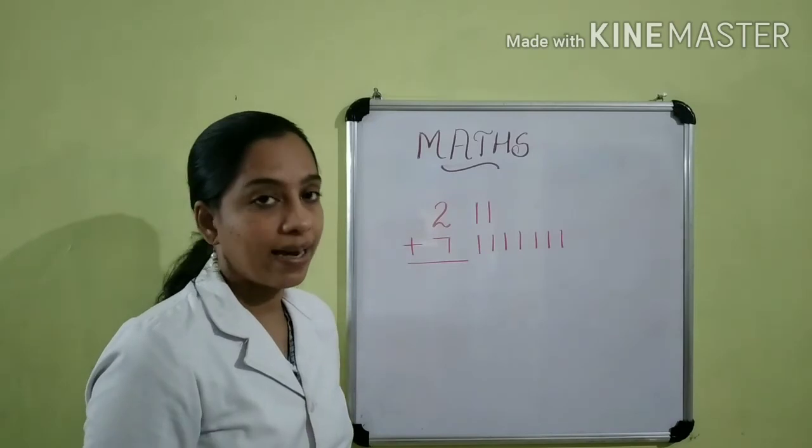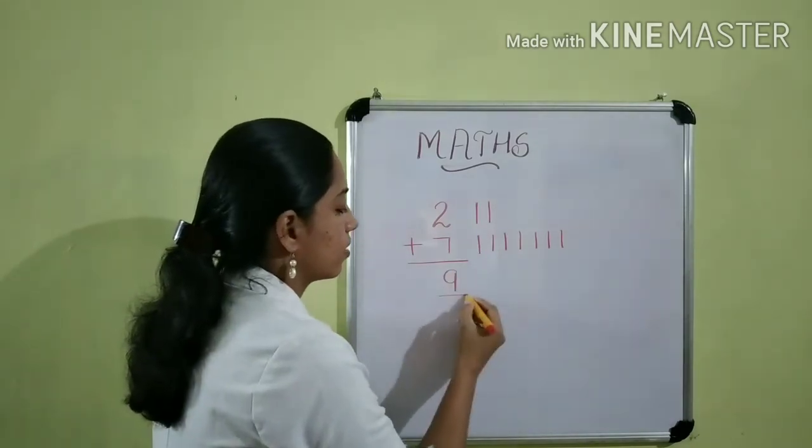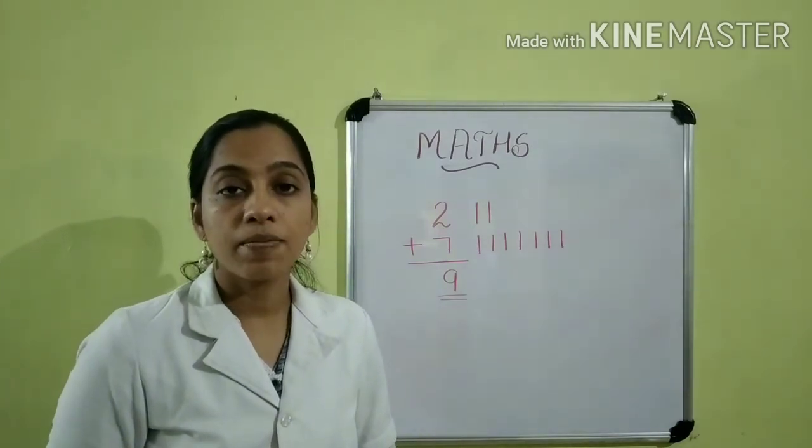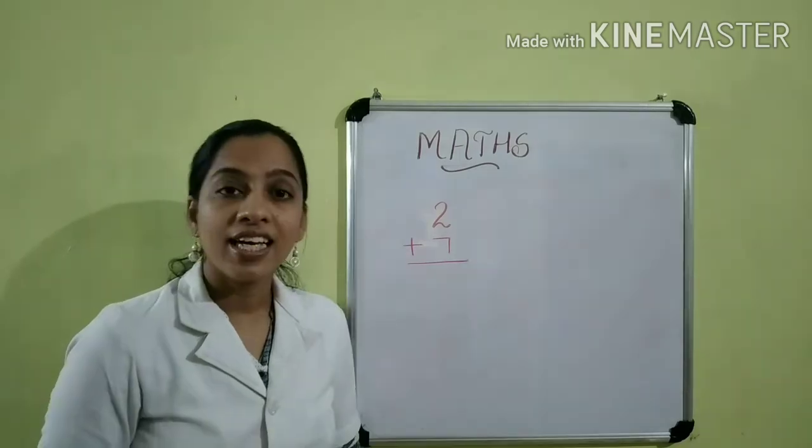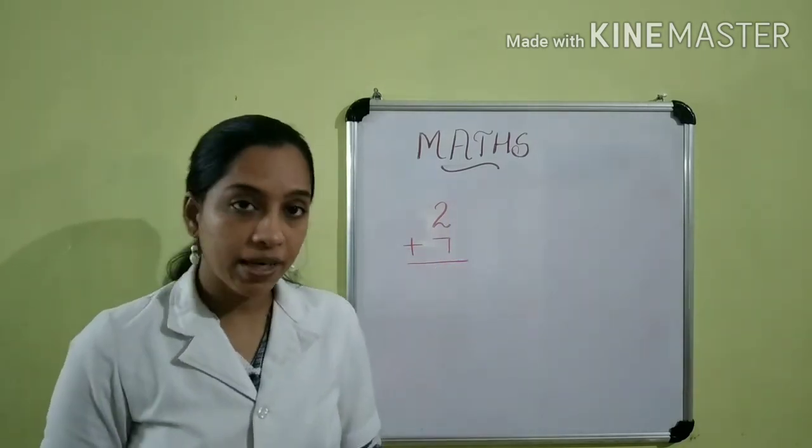Eight, nine. So, our answer will be nine. In this way, we can add numbers by drawing lines.